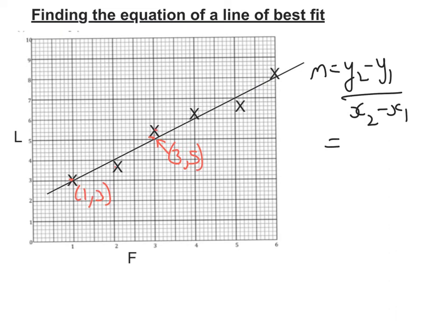So let's work that out. y2, well that's y2 there, that's 5, minus y1 is 3, over x2 is 3, minus x1 is 1. So 5 take away 3 is 2, 3 take away 1 is 2, so the answer is 1. So my gradient is 1.